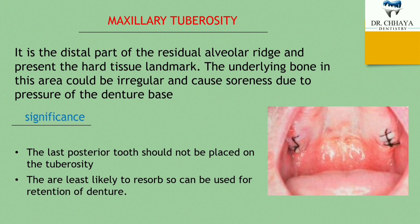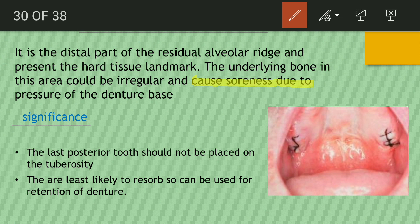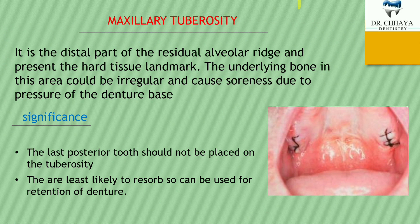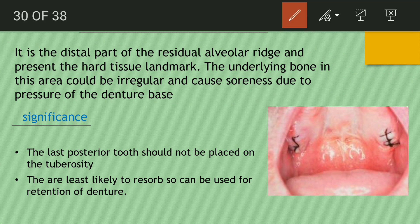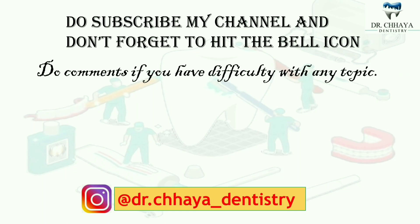What are the significances of maxillary tuberosity? The last posterior teeth should not be placed on the tuberosity — during teeth arrangement in the denture, the last teeth of the maxillary arch should not be placed on the maxillary tuberosity, because it causes soreness due to pressure. They are least likely to resorb, so they can be used for retention of the denture. As a hard tissue landmark, the maxillary tuberosity helps in denture retention.